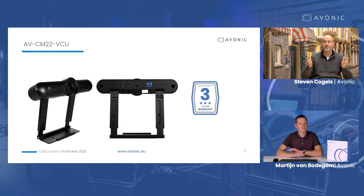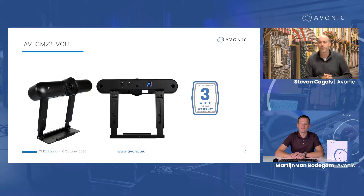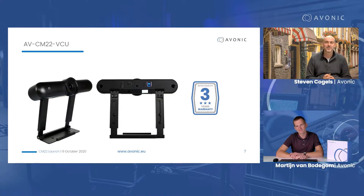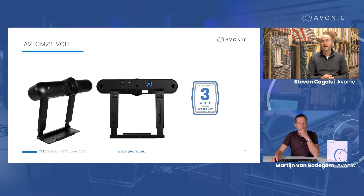Now let's look at the CM22, the subject of today's webinar. This has been a long process — we've had some challenges including COVID-19, causing delays, but we're happy to be able to launch it now. This is a brand new camera with a discrete design, really focused on huddle rooms, desktop use, and a number of other applications we'll be talking about. It comes with three years of warranty right out of the box.